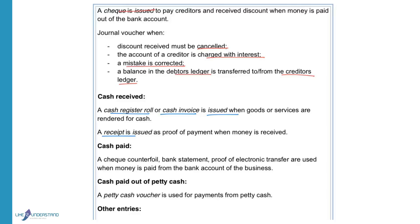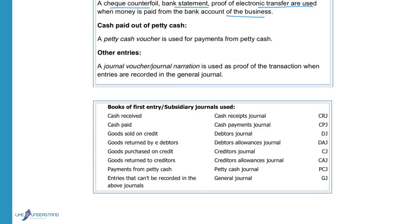Cash paid: A cheque counterfoil, bank statement, or proof of electronic transfer is used when money is paid out of the bank account of the business. When cash is paid from petty cash, a petty cash voucher will be used for payments.